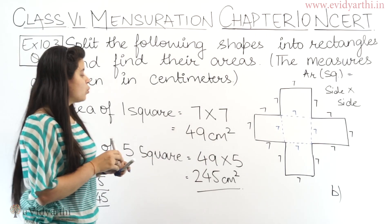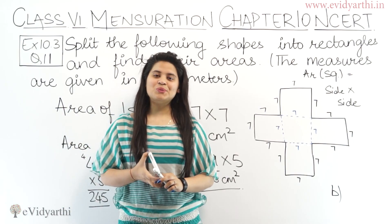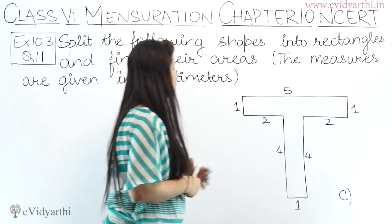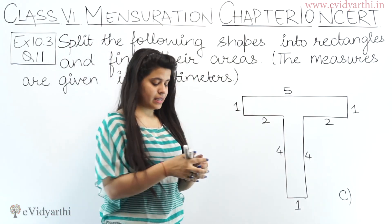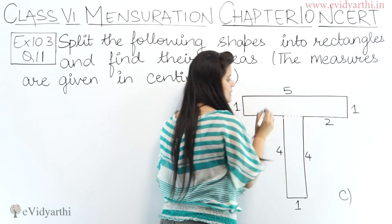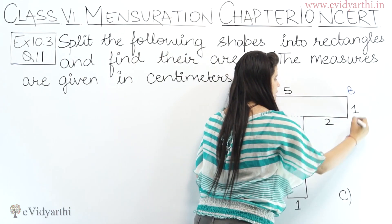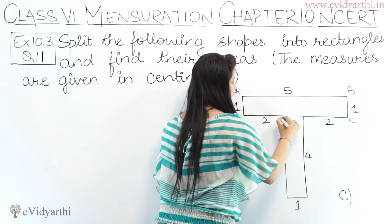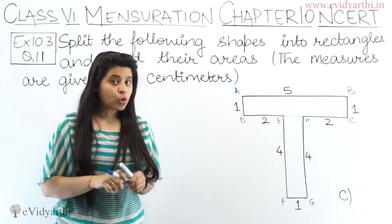So the area of the complete figure in part B is 245 cm square. Now coming to part C — in part C we have a figure which is in the shape of a T. Again, we divide it into rectangles. We make a line and split the figure into two rectangles: one is ABCD and the other is EFGH.